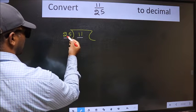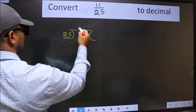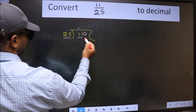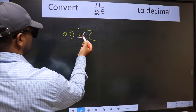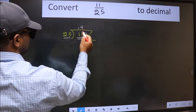11 is smaller than 25, so we should put a dot and take 0. So, 110. A number close to 110 in the 25 table is 25 times 4, which is 100.